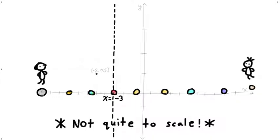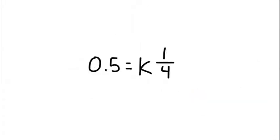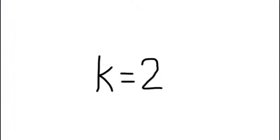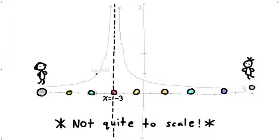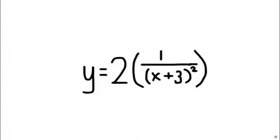Because you already know how to transform functions, you basically have the equation set up for you. All we need to do is find the k-value, or stretch factor, there. That means that the final answer will be y equals 2 times 1 over x plus 3 squared.